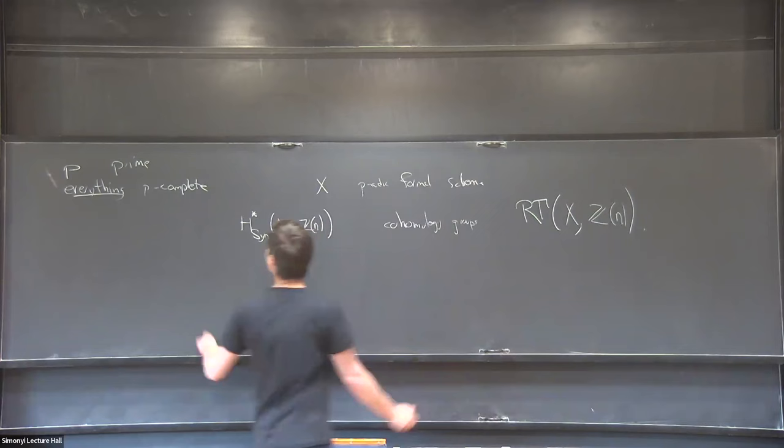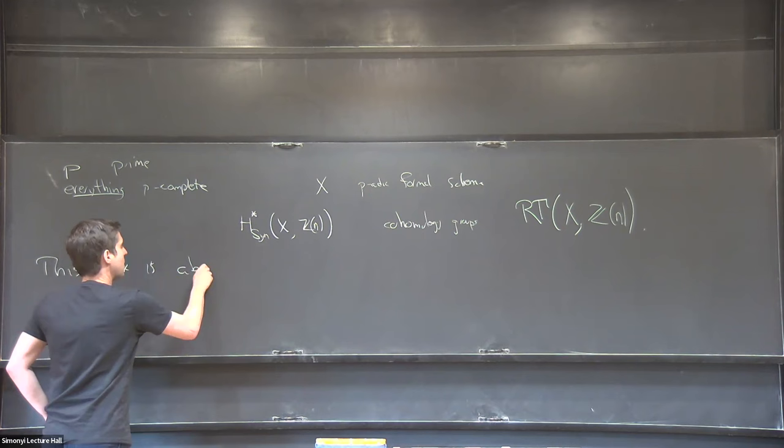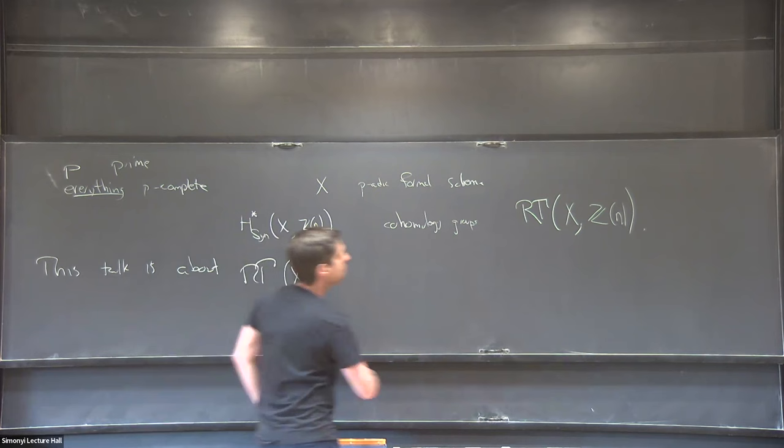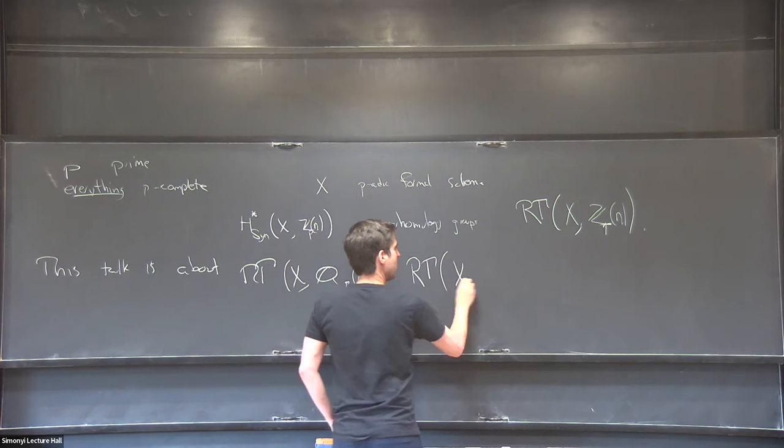Having promised that everything in this talk is going to be p-complete, I'm going to immediately violate that convention by saying this part is about what happens when you rationalize. So Rγ(X, Q_p(n)) — and by that I just mean take Rγ(X, Z_p(n)) and invert p.